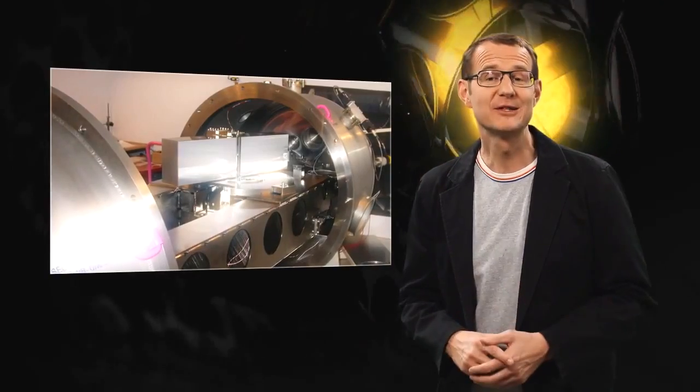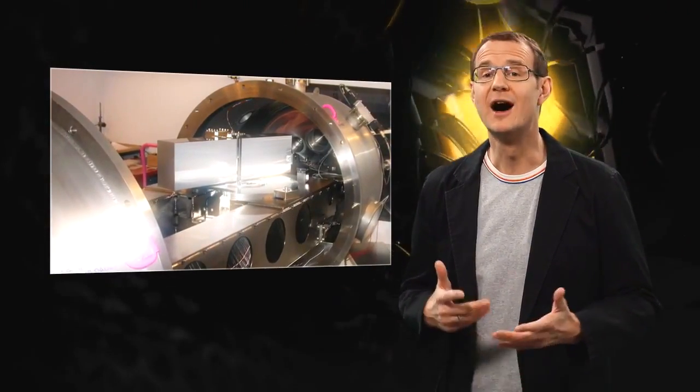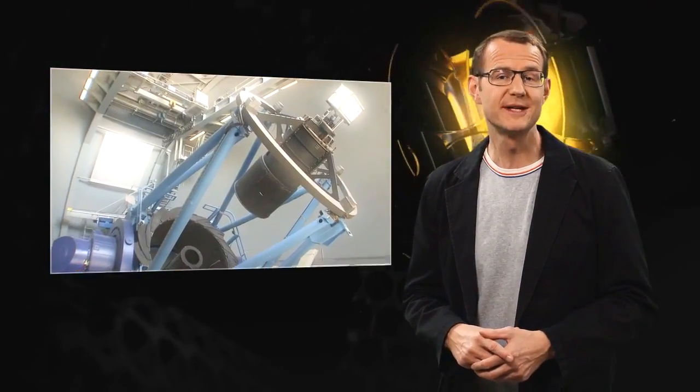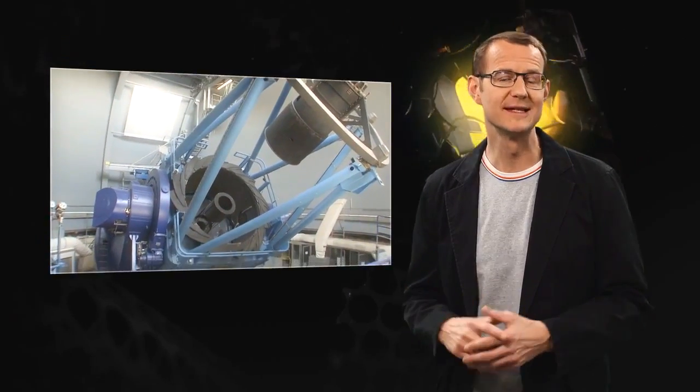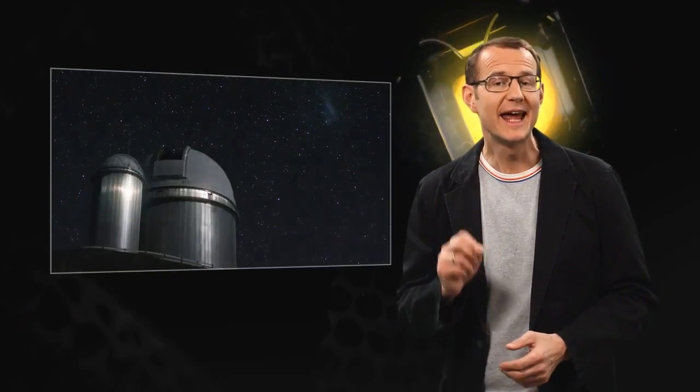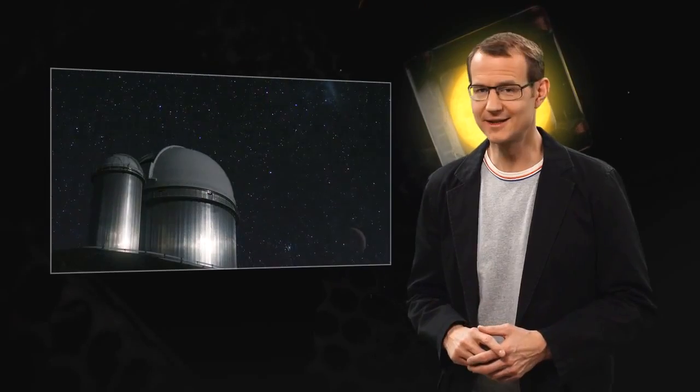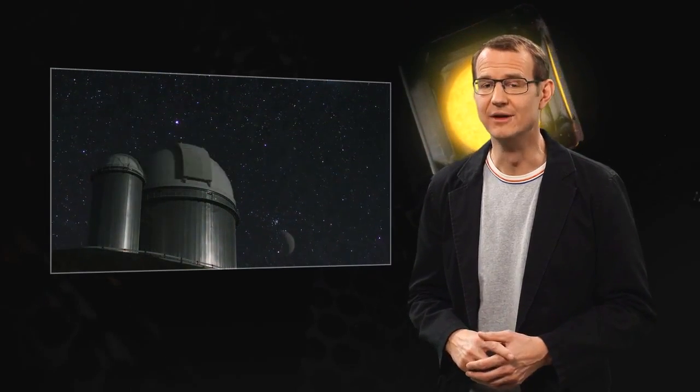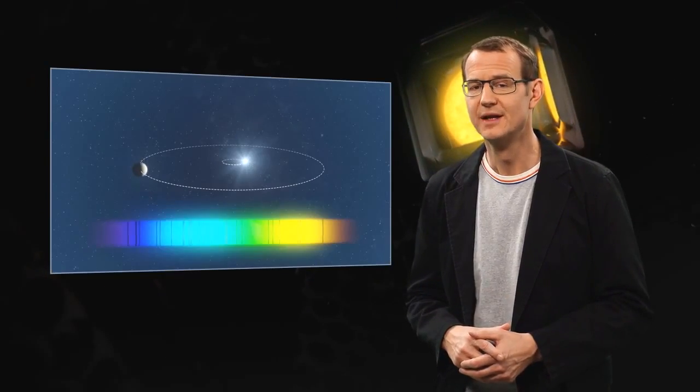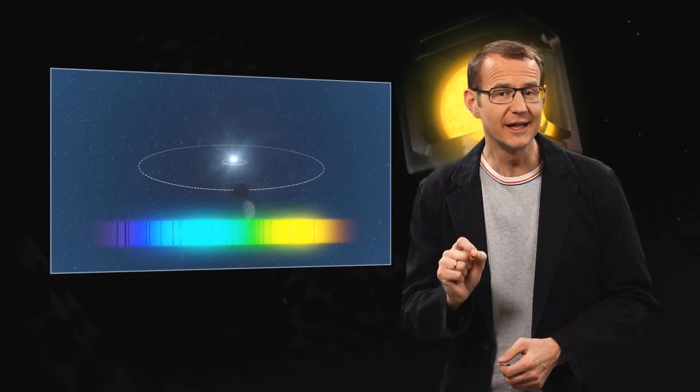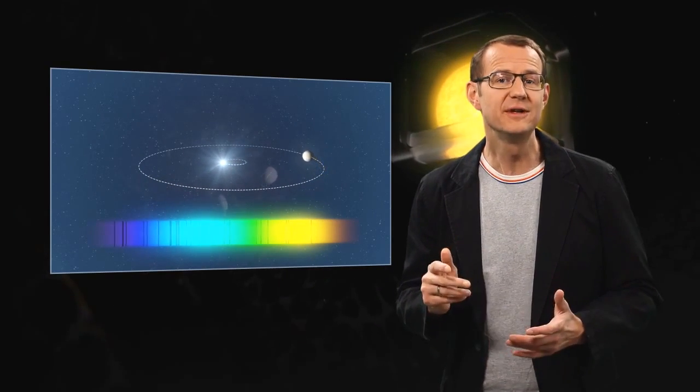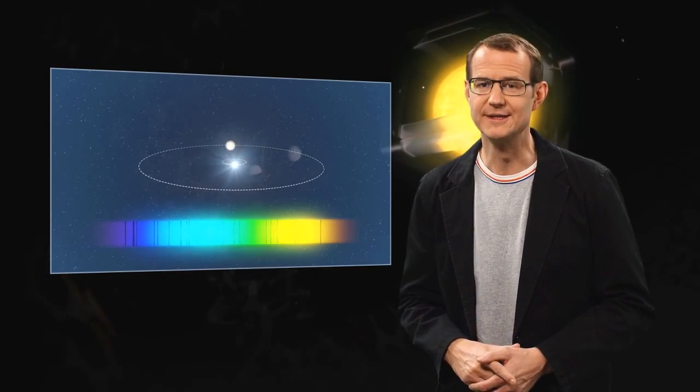To find the new exoplanets, the astronomers used the HARPS instrument on the 3.6-metre telescope at ESO's La Silla Observatory. They carefully monitored 88 selected stars in Messier 67 for a number of years. That allowed them to look for the tiny telltale motions of the stars that reveal the presence of orbiting planets.